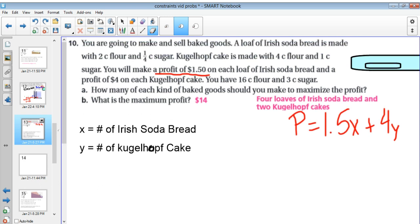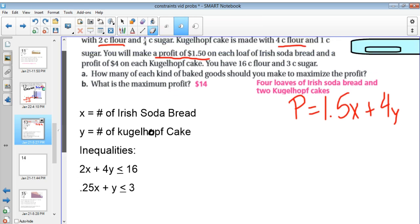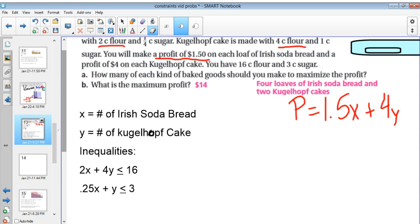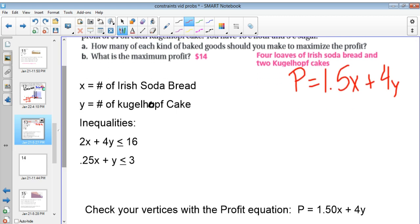We need to find our inequalities. And we're going to be dealing with these inequalities in terms of we're making it with flour and sugar. So I know that my inequalities are going to be 2X plus 4Y is less than or equal to 16. And the reason we have that is that deals with the cups of flour. So it's 2X and then 4 cups of flour for the Kugelhopf. So that is less than or equal to 16 because you can use up to 16 cups of flour, but you can't use more than that. Our other inequality would be 0.25X plus Y is less than or equal to 3. And that deals with cups of sugar. The Irish soda bread uses one fourth cup of sugar, whereas the Kugelhopf uses just one cup. So that's one Y.